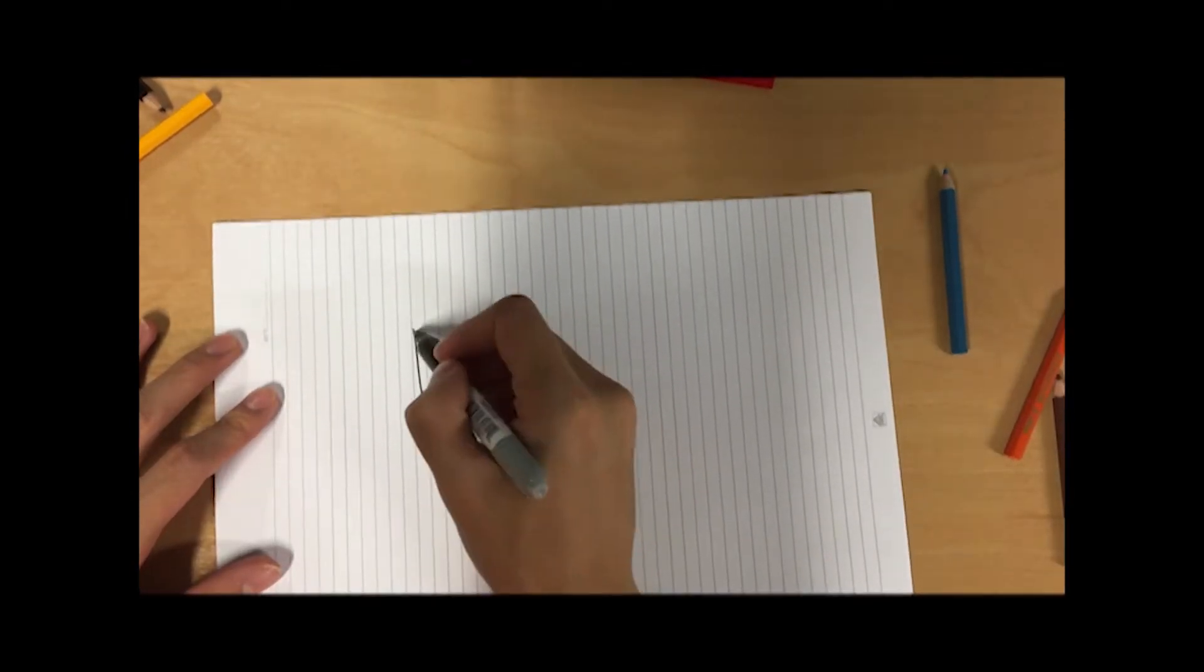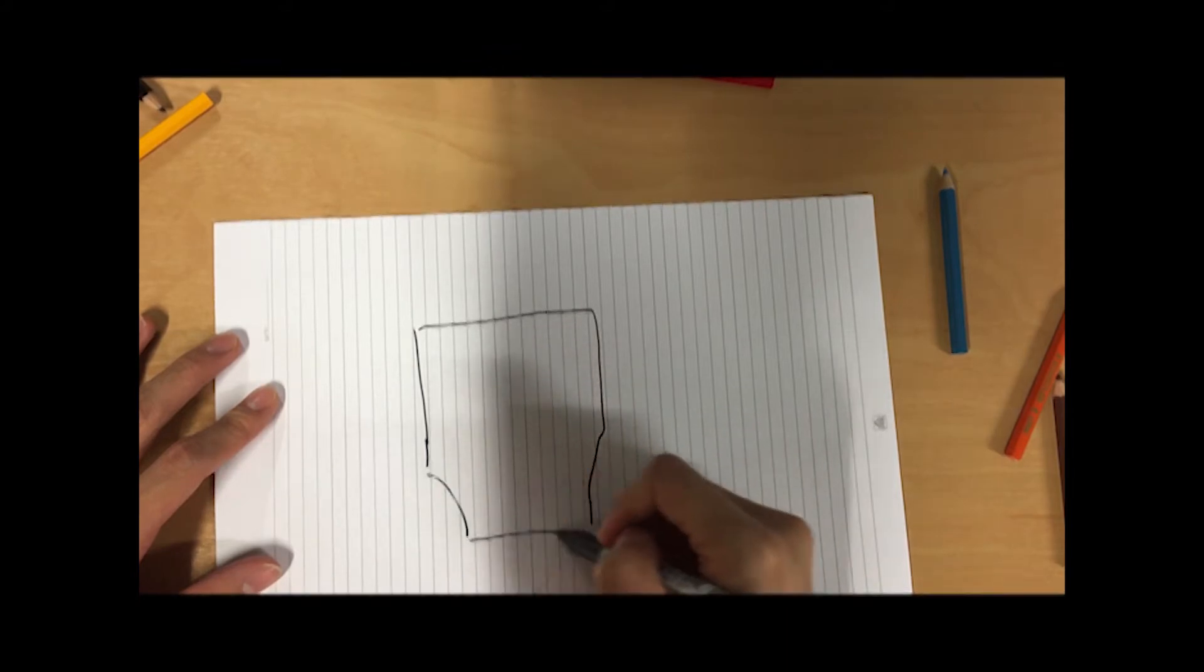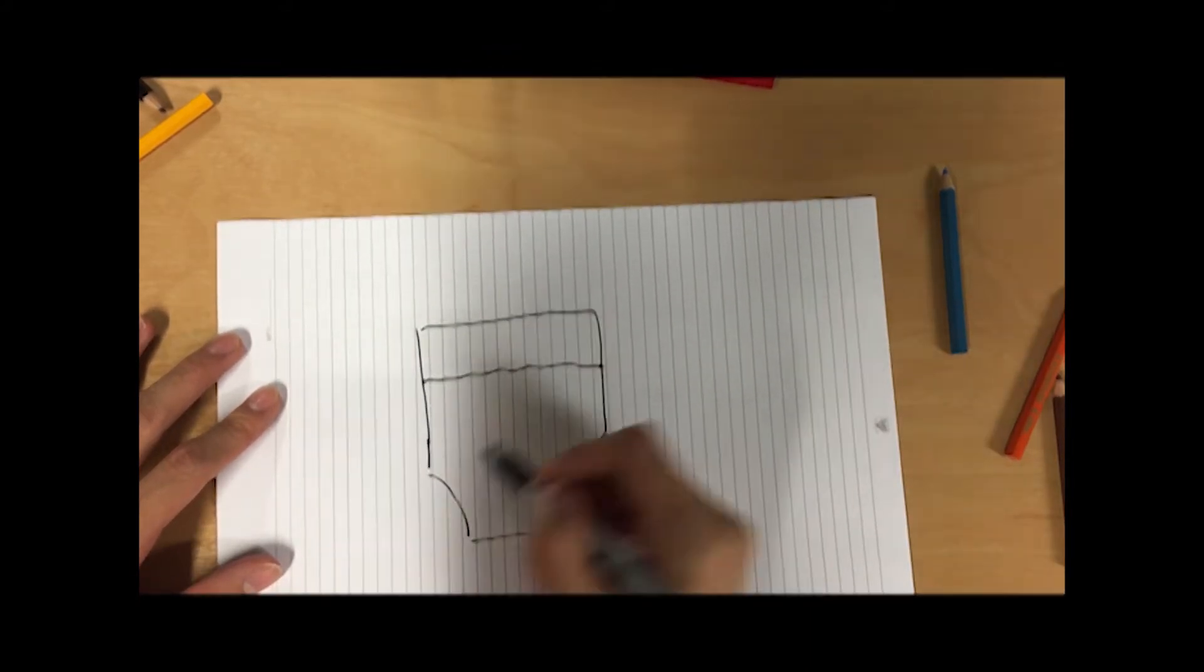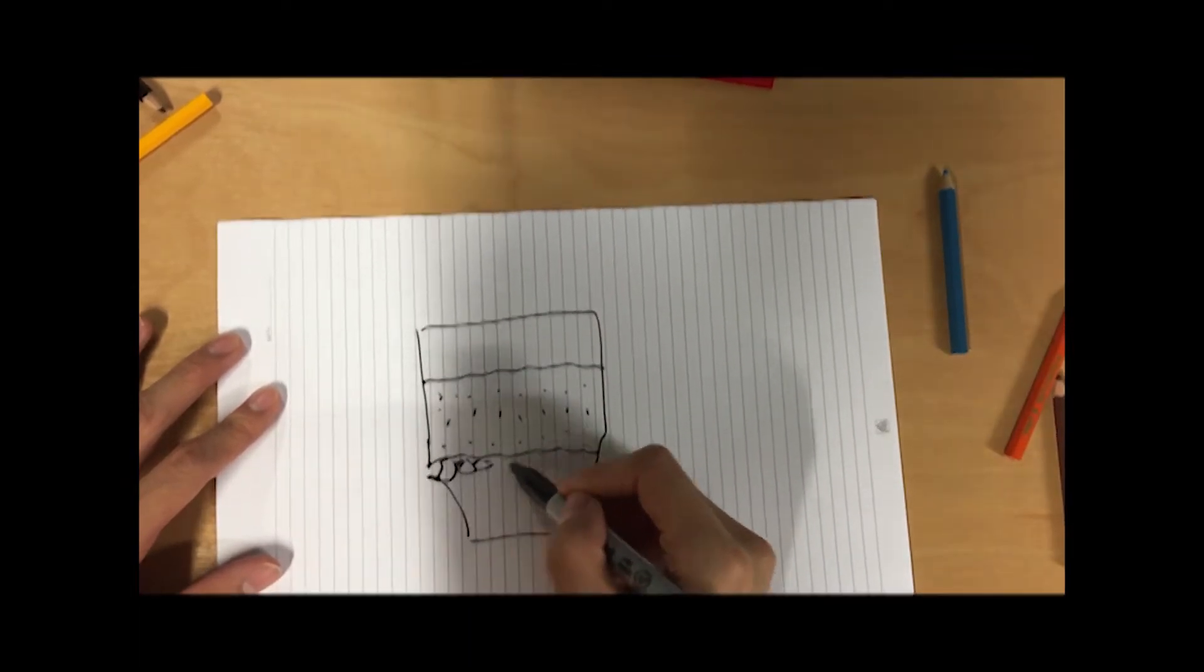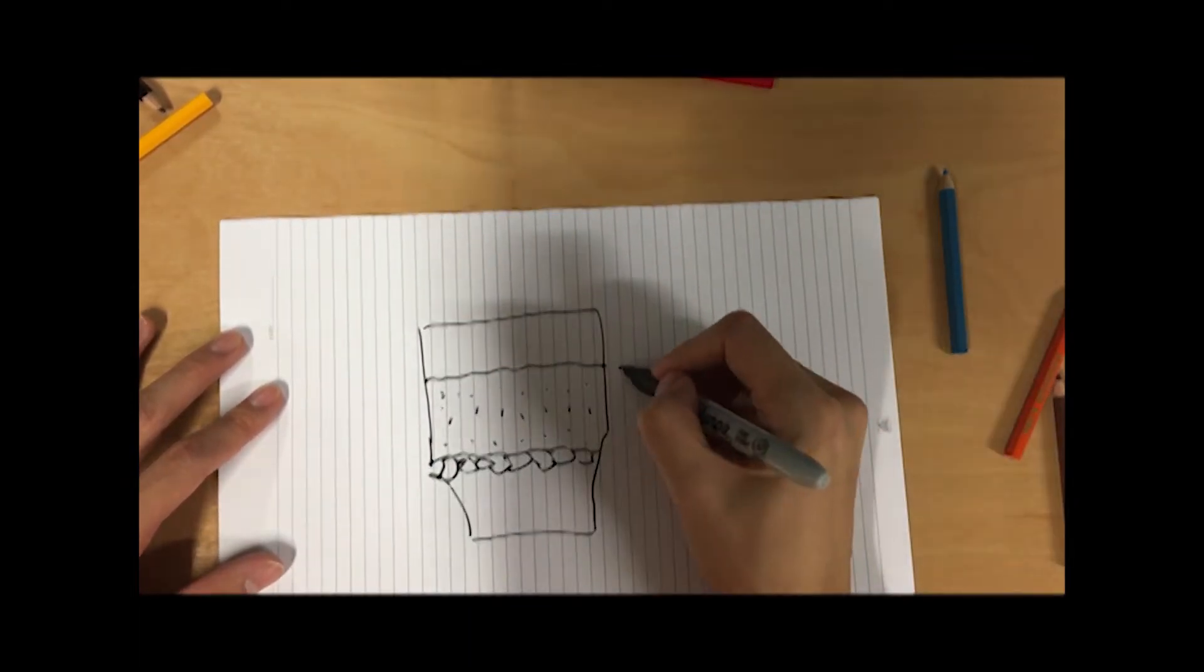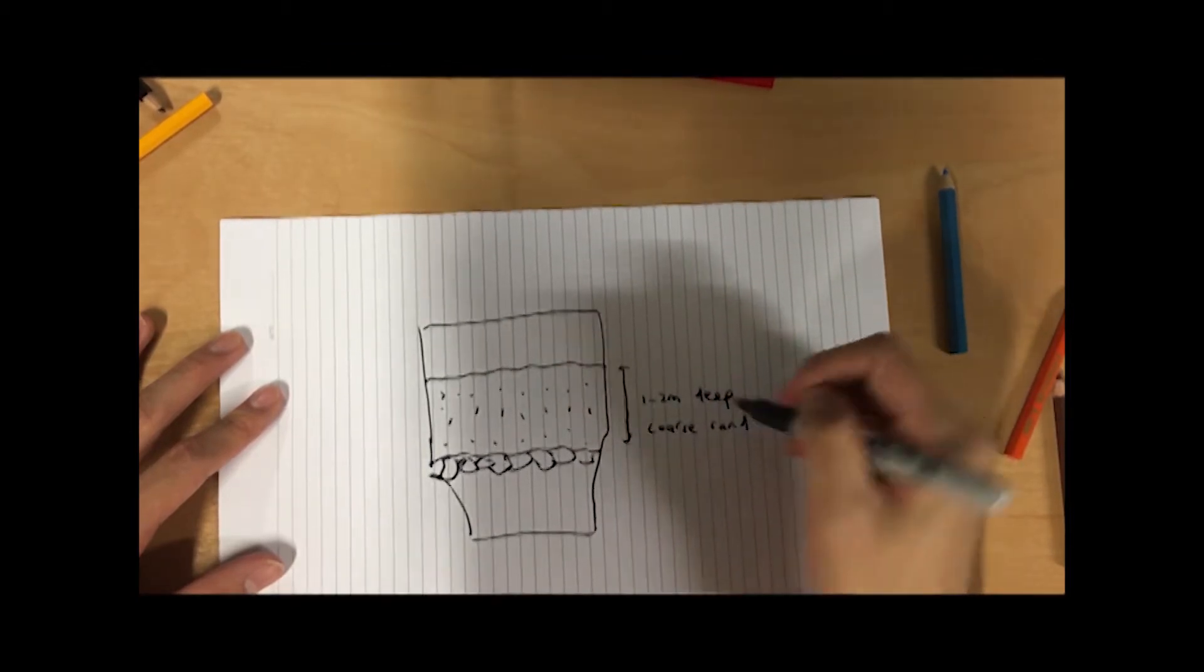The filter is normally in rectangular shape and concrete walls are built to make sure that the whole structure is solid. 1 to 2 meters of coarse sand, which is clean and uncontaminated, are added into the filter with a layer of gravel sitting below the bed of sand in order to hold them in place.